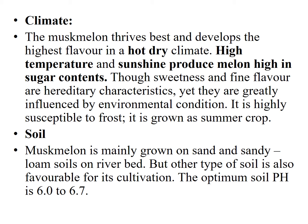Regarding soil, musk melon can be grown in all types of soils, but sandy to sandy loam soil on a riverbed is the best suitable and favorable for their cultivation. Their optimum pH required is 6 to 6.7, which is necessary for the cultivation of musk melon.